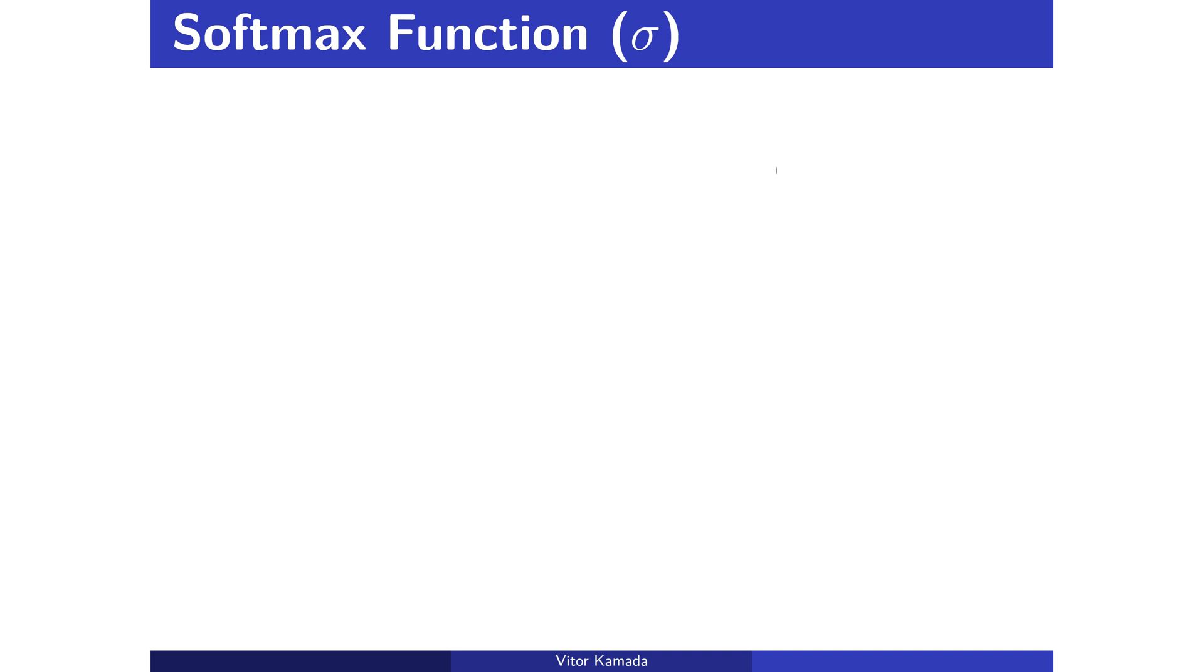Now, let's formalize mathematically the concept of softmax function sigma. First, let's start with the vector of input z. It is the weight of the hidden layers plus the bias term or intercept.